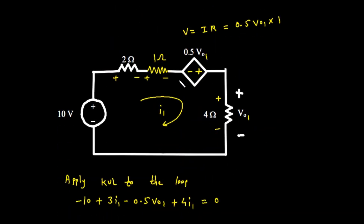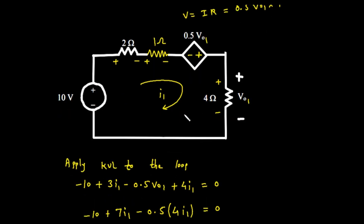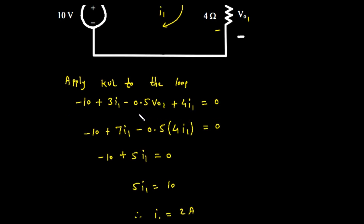The dependent source's value is now 0.5 times V01. Now we will apply Kirchhoff's voltage law, or KVL, to this loop. Let's define the current flowing in the loop as I1. The solution treats the dependent current source as a dependent voltage source for the KVL calculation. The KVL equation is written as: minus 10, plus 2 times I1, plus 1 times I1, minus 0.5 times V01, plus 4 times I1, equals 0.